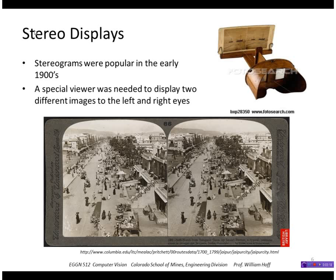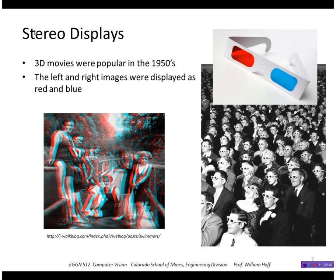Just some history in terms of stereo displays. We can display 3D information to people. It was popular in the early 1900s with stereograms. You could use a special viewer as shown here to see two images, each image would be presented to the eyes separately.